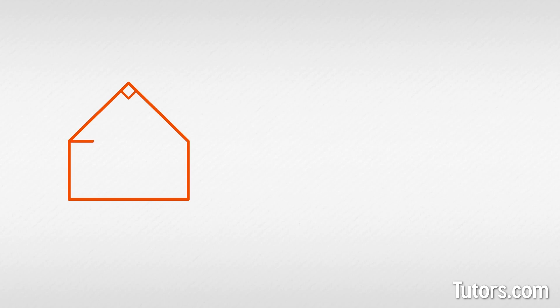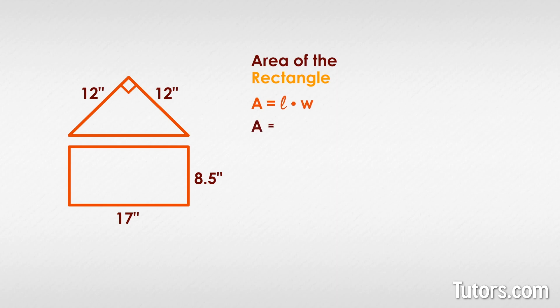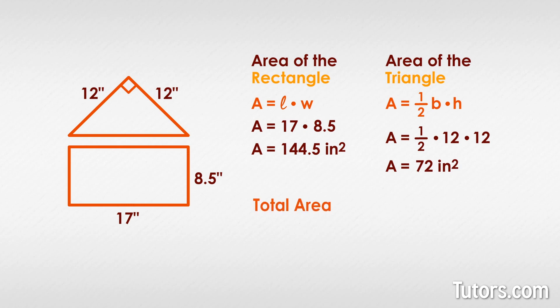Here is the home plate of an MLB baseball field. You can calculate the area of this home plate pentagon by considering it has two shapes: a rectangle 17 inches by 8.5 inches, and an isosceles right triangle with legs 12 inches. Plugging in our numbers into the rectangle formula, a equals length times width, we get a equals 145.5 inches squared. Next, using the triangle formula, a equals one-half b times h, we get a equals 72 inches squared. Adding these two areas gives the total area of home plate: 216.5 inches squared.